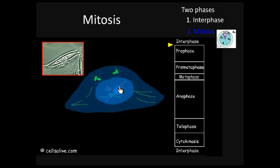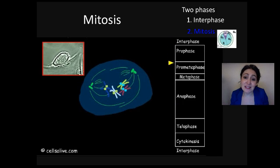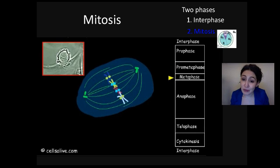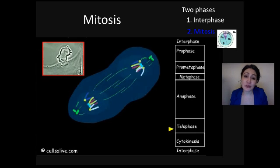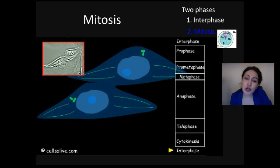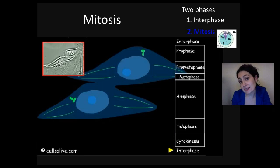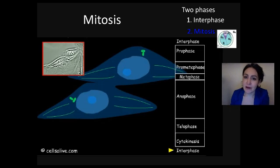Now let's go over mitosis. In prophase the nuclear envelope breaks down and microtubules begin to attach to the chromosomes. In metaphase chromosomes align at the middle of the cell. At anaphase the sister chromatids pull apart, and at telophase we see the nuclear envelope reforming. In cytokinesis we see division of the cytoplasm. The term mitosis means division of the nucleus; cytokinesis means division of the cytoplasm. For our purposes, we're going to consider cytokinesis a part of mitosis.